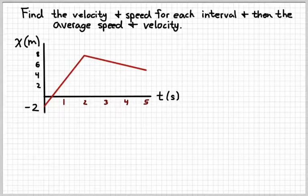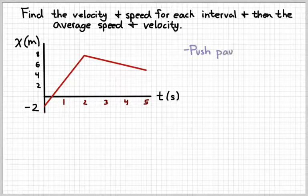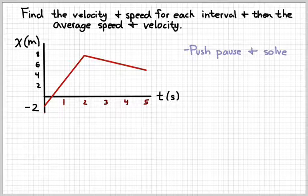So, let's see if you can do one of these on your own. Here's a position versus time graph. Press the pause button and see if you can find the average speed and average velocity, and then the instantaneous speed and velocity for each interval. See if you can work that out on paper, your notes, a whiteboard, whatever. Then press play again and check your solutions against mine.